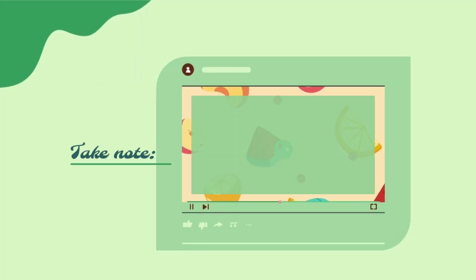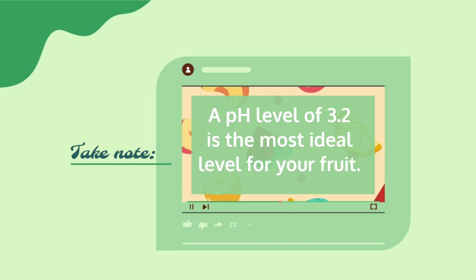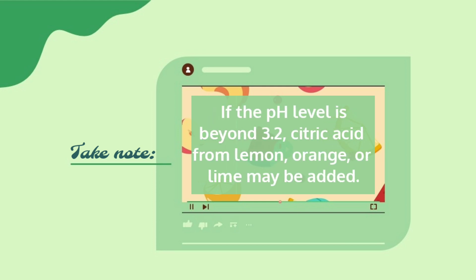Take note: a pH level of 3.2 is the most ideal level for your fruit. If the pH level is beyond 3.2, citric acid from lemon, orange, or lime may be added.